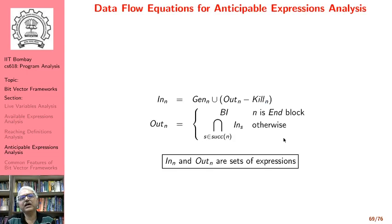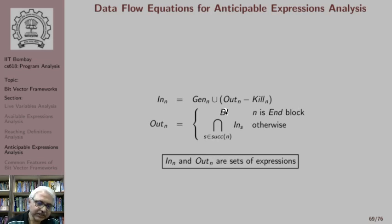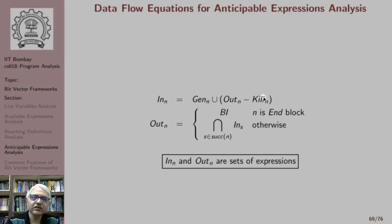The data flow equations are a dual of available expressions analysis. Like available expressions analysis we use intersection, except that in available expressions analysis we computed in[n] as the intersection of out of the predecessors. Here we compute out[n] as the intersection of in of its successors, using boundary information for the exit block. Then in[n] is computed from out[n] by removing those expressions whose anticipability is killed and adding those expressions whose anticipability is generated. In and out are sets of expressions.